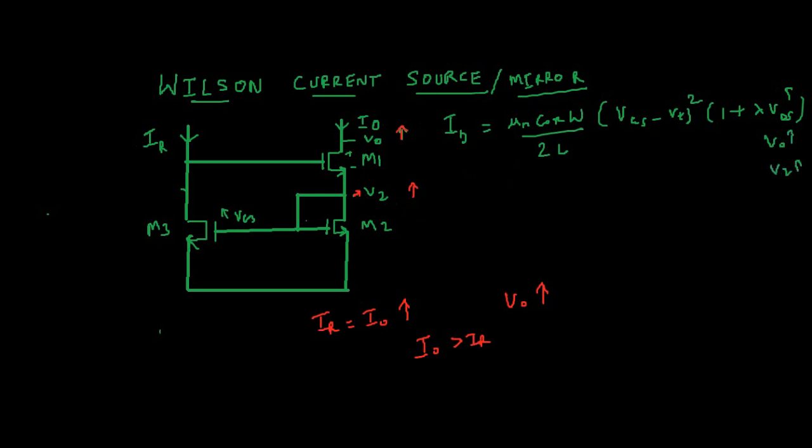Now this V2 is connected to gate of M2 and gate of M3. You can see V_G3 also increases. Earlier it would be at some voltage say 1.1 volt, now it is 1.2 volt. However, we have M3 which is driven by constant current IR.